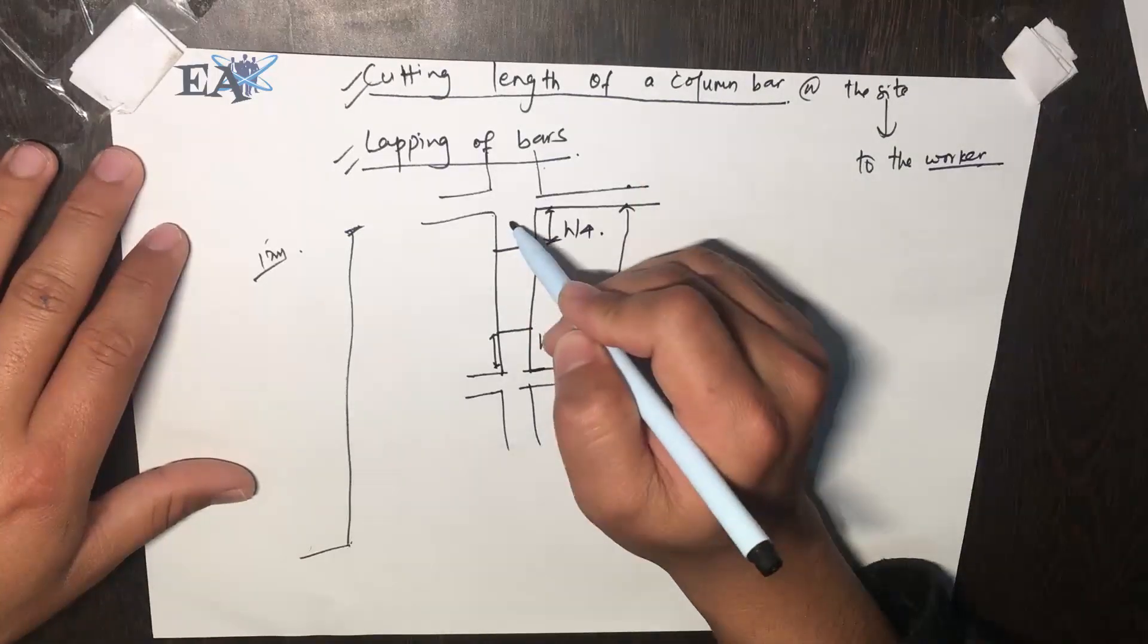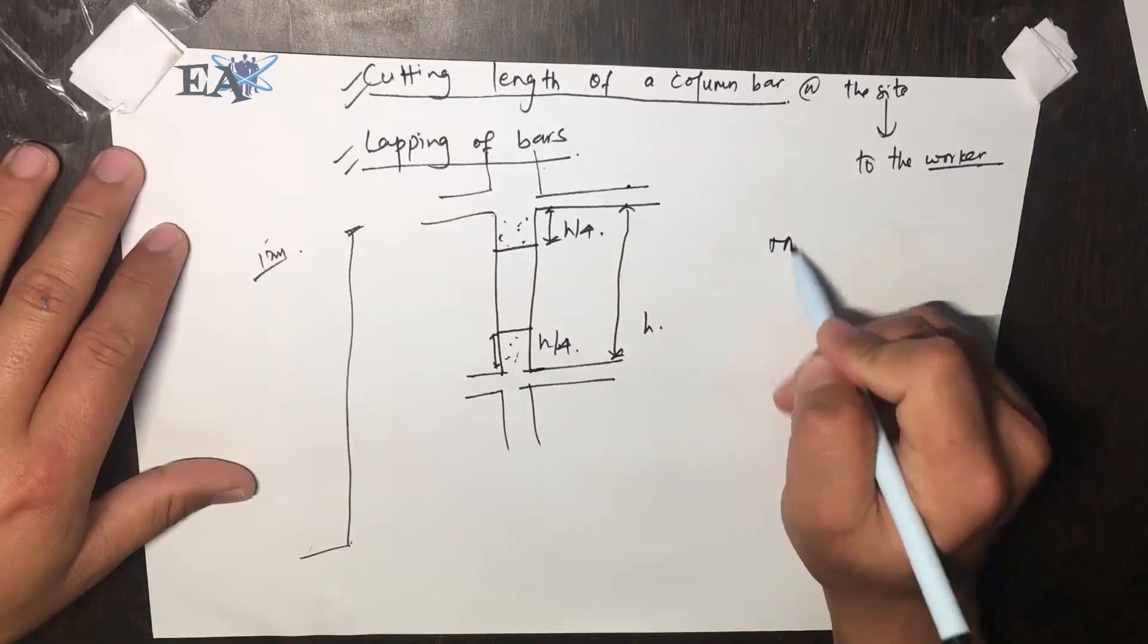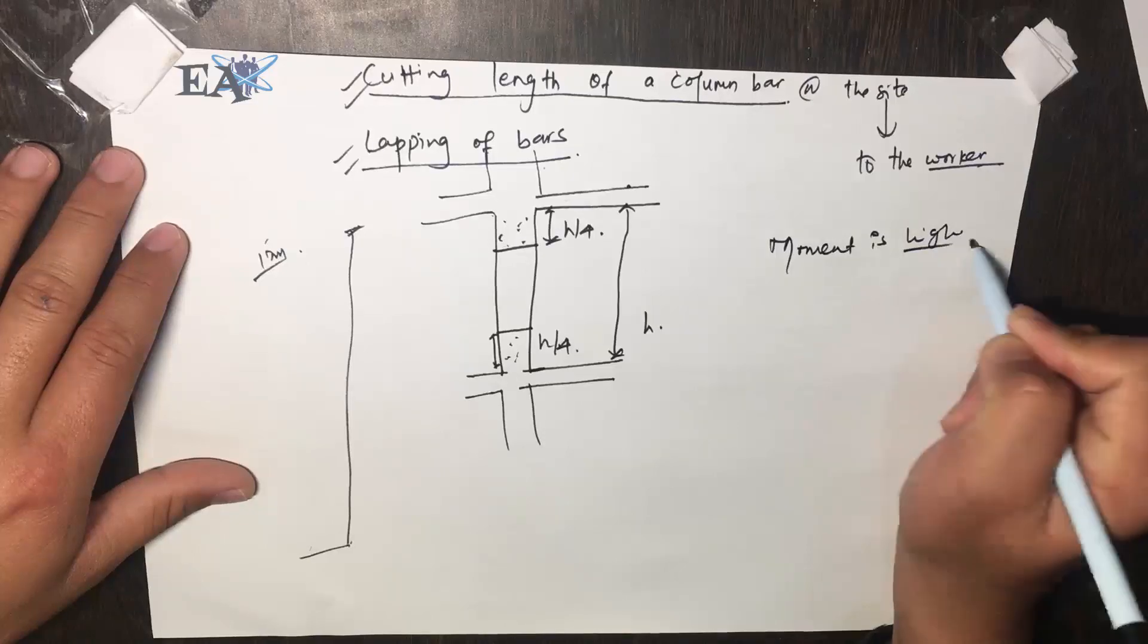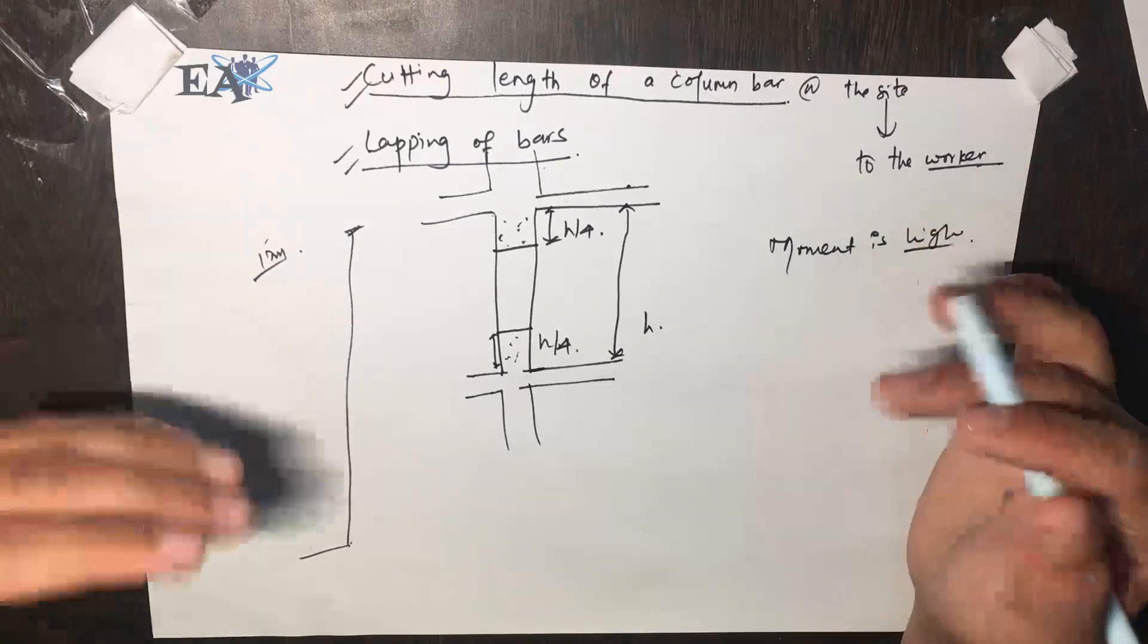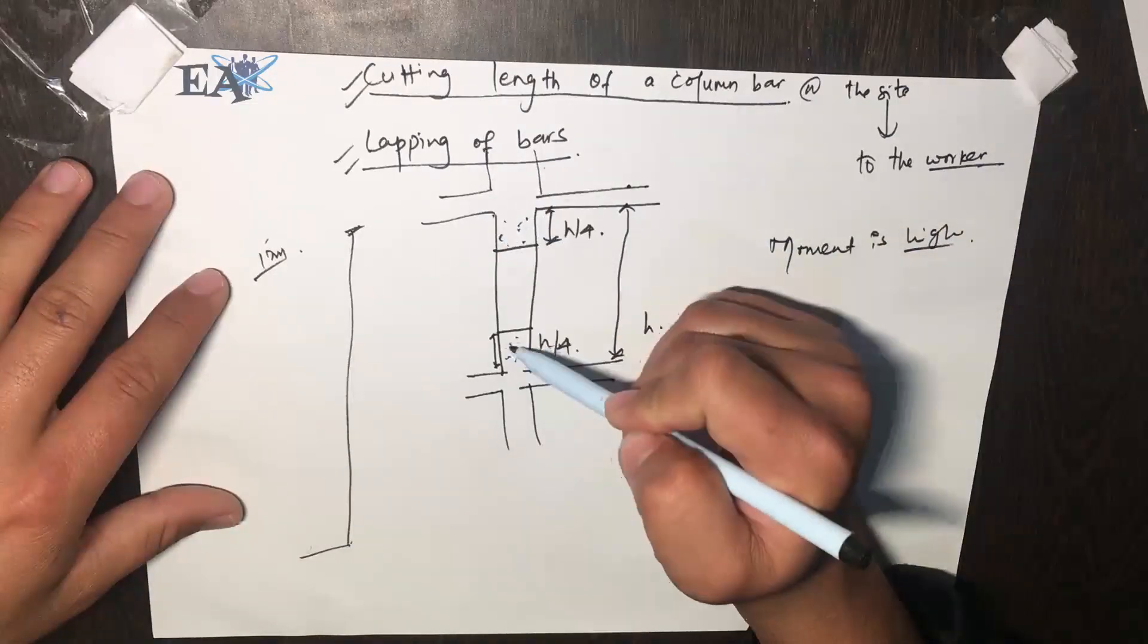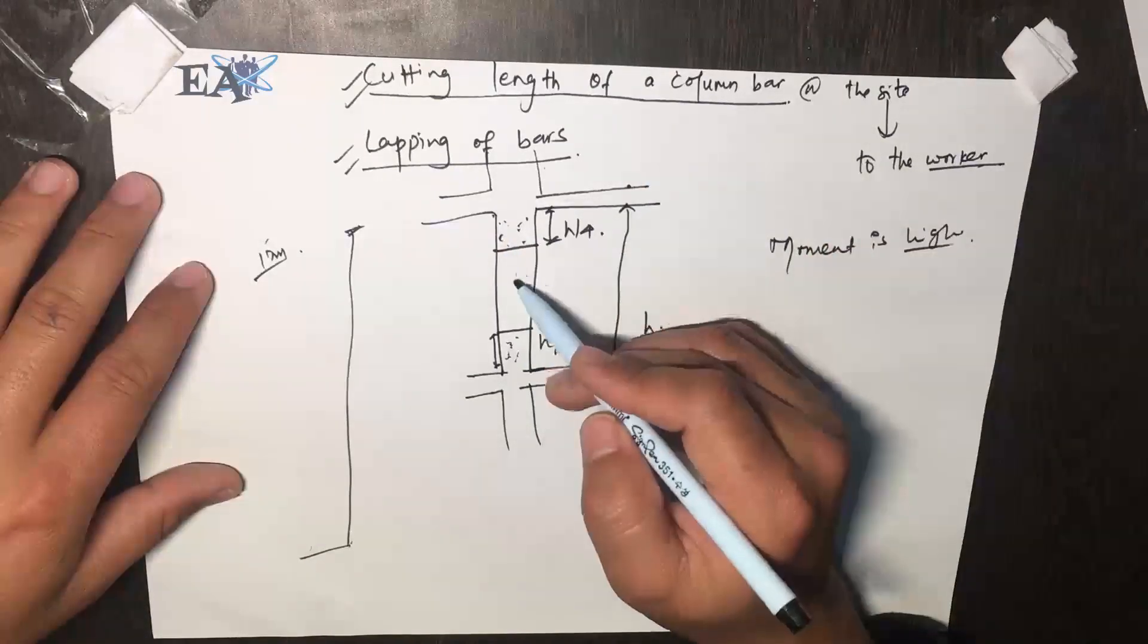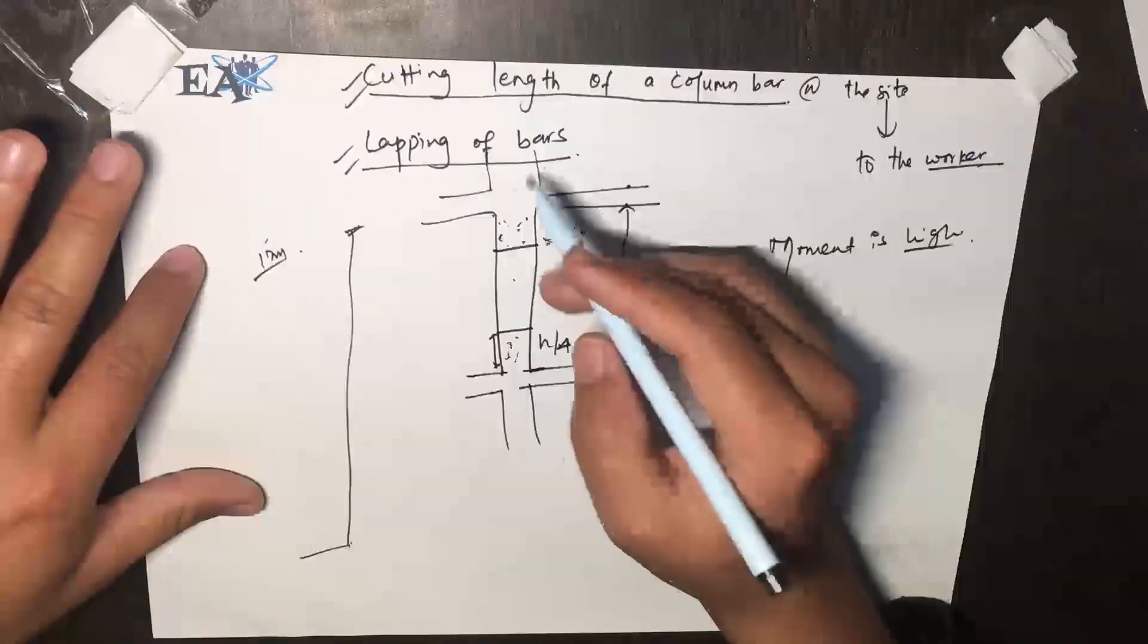In these two regions, the moment is high. If you have done any SAP analysis or the analysis of any building and if you see the bending moment diagram, you will see that the moment is high at these positions and the bending moment is lower at the mid portion of any column.